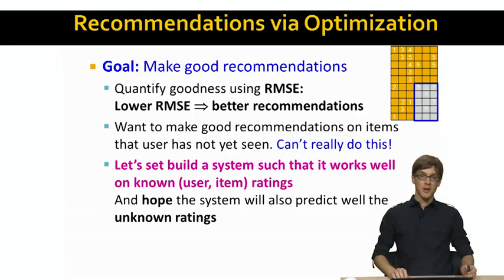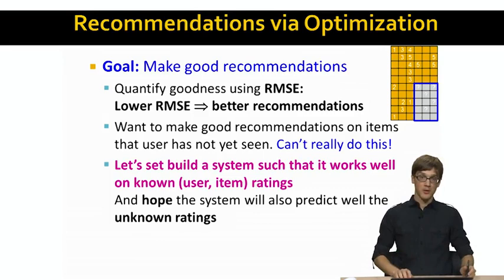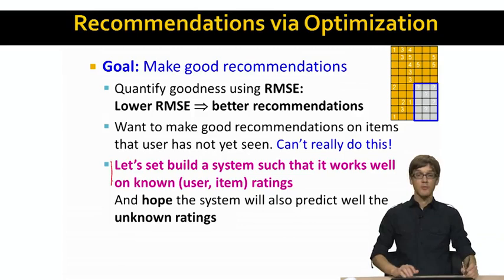What we would really want is to make good recommendations on items that people haven't yet seen — basically, we want to predict in the future what people are going to like. Of course, we cannot really do this because we are not prophets. So what we will have to be satisfied with is building a system that is able to predict the ratings that we already have well.